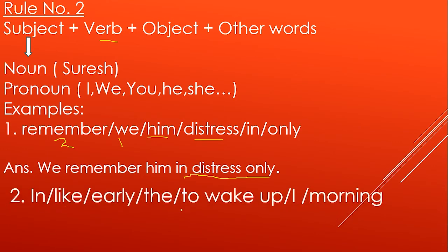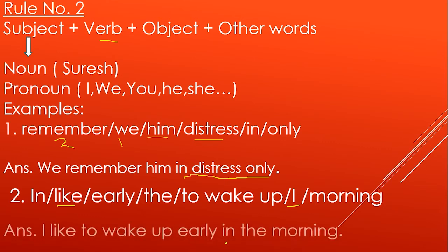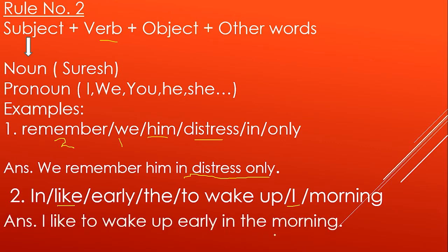Aiye ek aur example dekh lete hain: 'in, like, only, the, to, wake up, I, morning.' Ab isko sahi tariqe se arrange kijiye. Sabse pehle subject dhoondo — to subject aapka 'I' hai. Uske baad aap verb dhoondo — to verb aapka 'like' hai. Like ka matlab hota hai pasand karna. Ab kya pasand kiya ja raha hai? To wake up early in the morning. To aap iska meaningful sentence likhenge: 'I like to wake up early in the morning.' Pehle subject dhoonde, phir verb — jab verb milta hai to like ka matlab hai pasand karna — kya pasand kiya ja raha hai? Subah jaldi uthna.